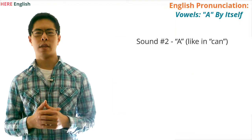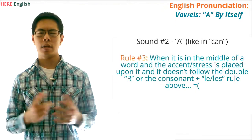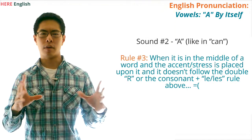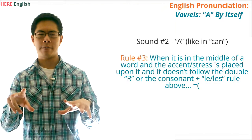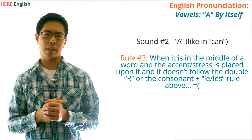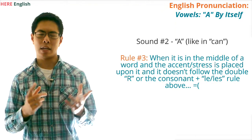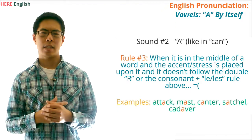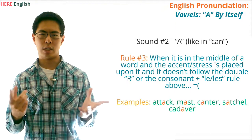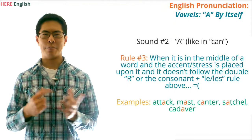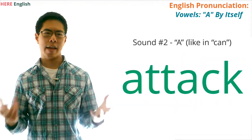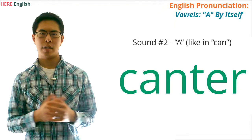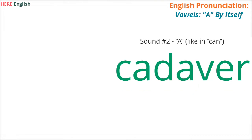Here's the third rule for when the vowel A will sound like A: usually, when the vowel A is in the middle of a word and the accent or stress is placed upon it, and it doesn't follow the double R or the consonant plus LE or LES rule, it will sound like A. Sorry, this rule isn't very clear, but there are just too many exceptions and complexities within the English language. Examples of words with this rule are attack, mast, canter, satchel, and cadaver, which is basically a dead body. Practice saying: attack, mast, canter, satchel, cadaver.